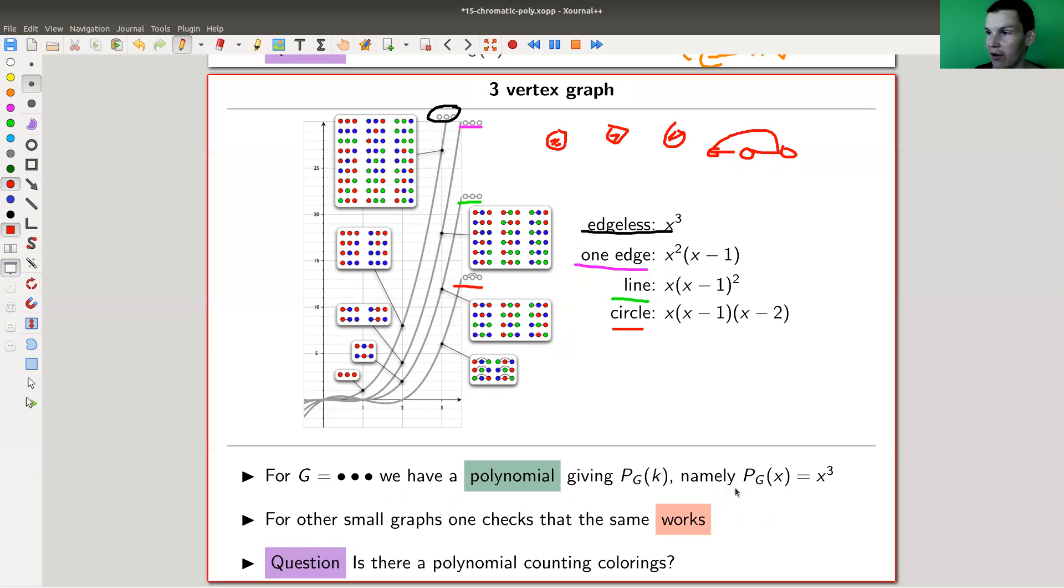The number of colorings is always just given by x to the three or k to the three where k is the number of colorings. So there is actually a polynomial that gives all of these numbers, which is x cubed. So if you want to count the number of three colorings, you get three cubed because they essentially free to associate to each vertex a color. So you get three times three times three.